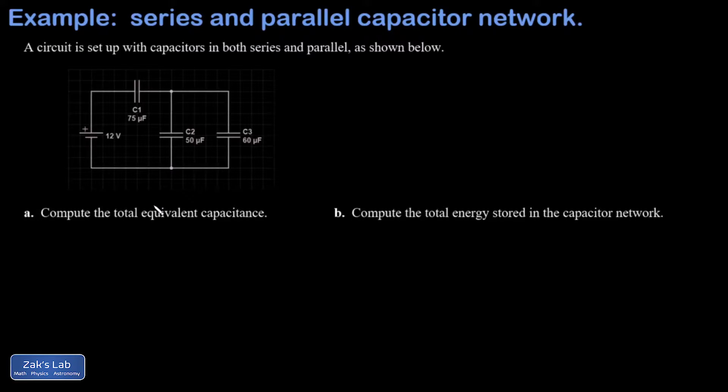I'm going to start by highlighting these two nodes and say okay, C2 and C3 are clearly in parallel because the high side of these two capacitors is directly connected with resistanceless wire so they're guaranteed to have the same potential there, and their low sides are connected with resistanceless wire so they're guaranteed to have the same potential there, which happens to be zero because it's connected to the low side of the battery.